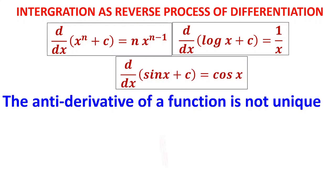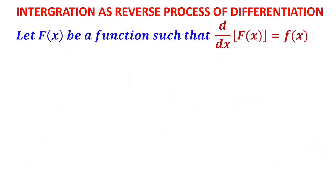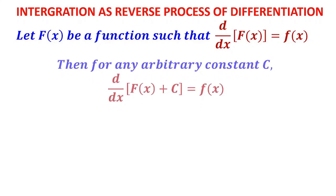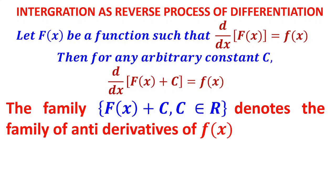The anti-derivative of a function is not unique — indefinitely many anti-derivatives can be obtained by choosing c arbitrarily from the set of real numbers. Every integration formula will have that plus c because the anti-derivative is not unique. If capital F(x) is a function whose derivative is f(x), then as we change the value of c we get a family of curves F(x) + c, all satisfying a common property — it denotes the family of anti-derivatives.